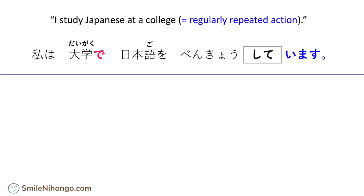私は大学で日本語を勉強しています。That's how you say it. Again, it's not 勉強します — you have to say 勉強しています in te-form imasu expression. 私は大学で日本語を勉強しています。